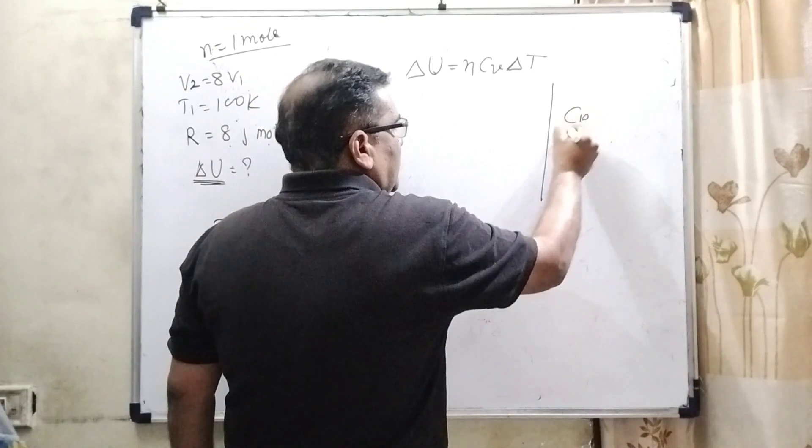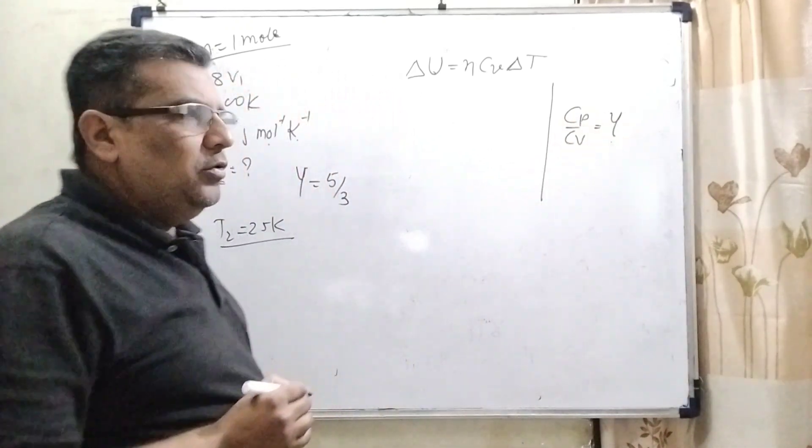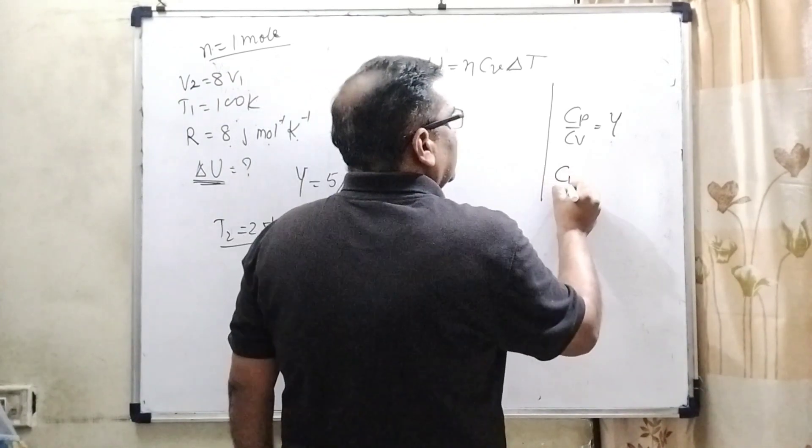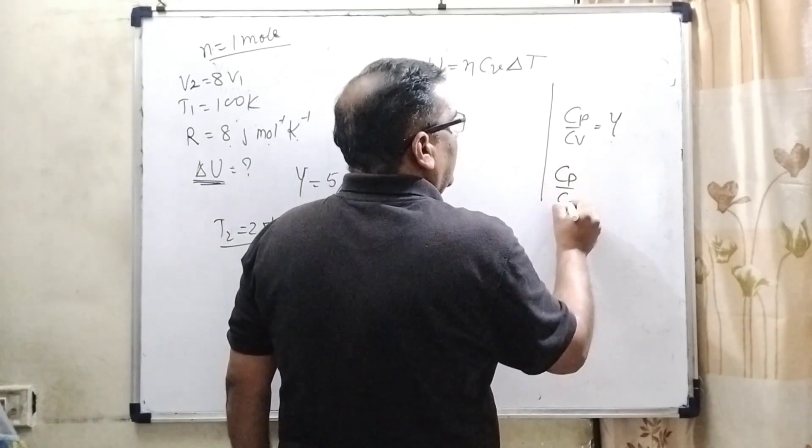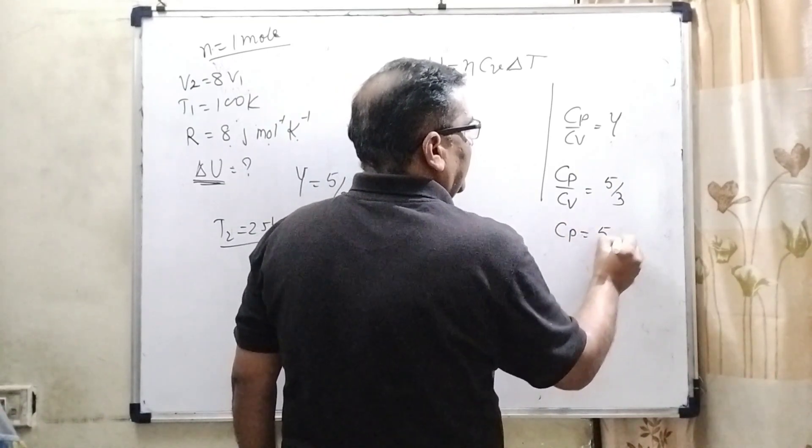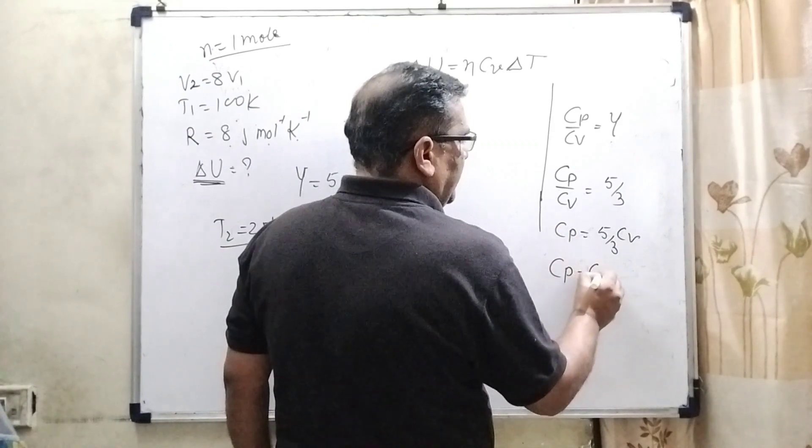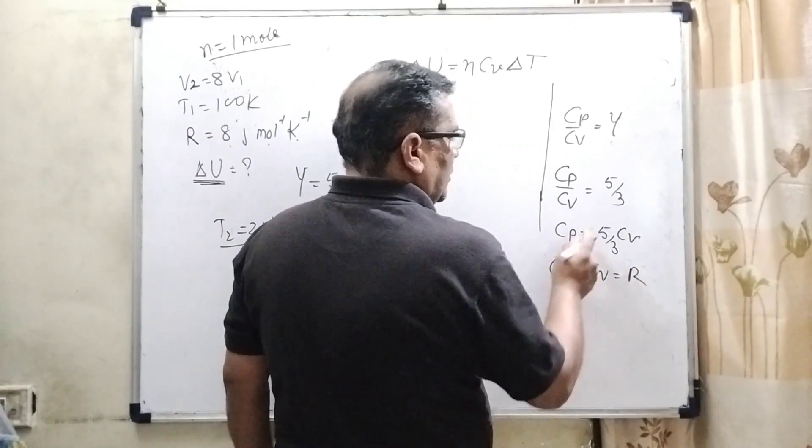We know that Cp upon Cv is equal to gamma. For monoatomic gas, the value of gamma is 5 by 3. So Cp can be written as 5 by 3 Cv. Now, Mayer's formula. We know that Cp minus Cv equal to R.